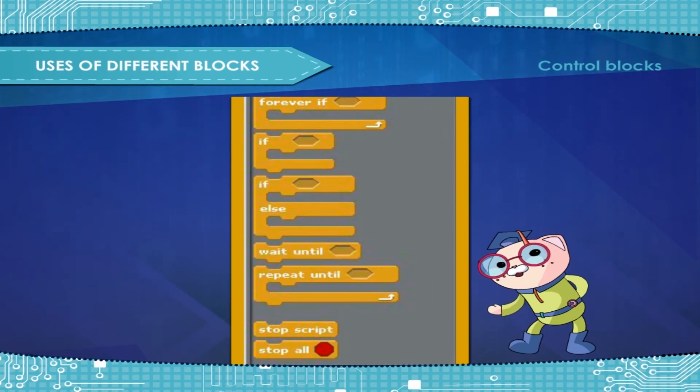Repeat until is a loop that will stop once the condition is true. Scratch has one control cap block.